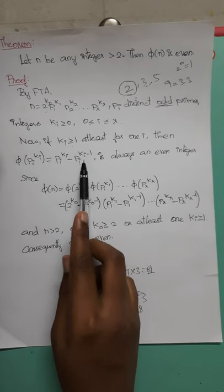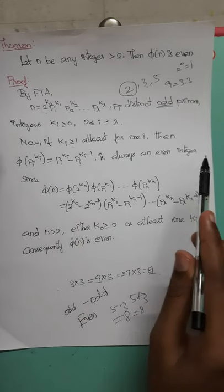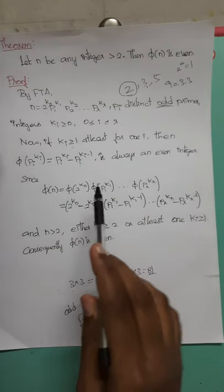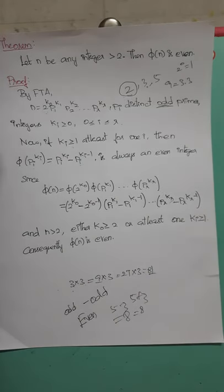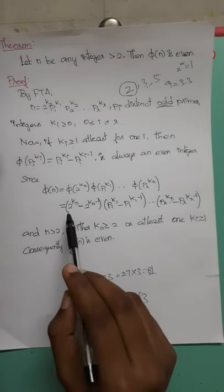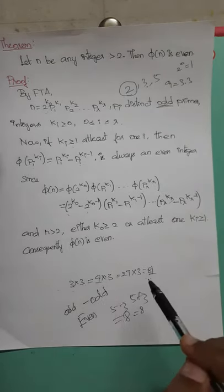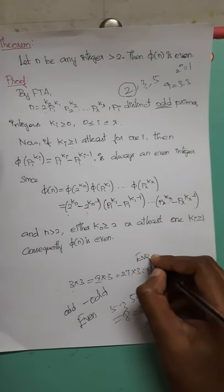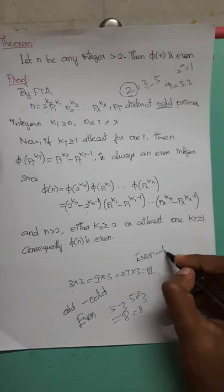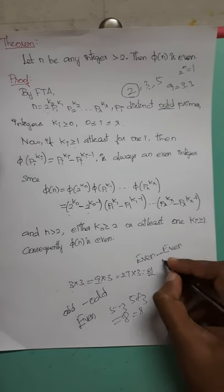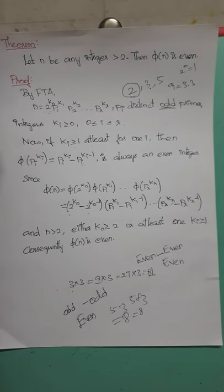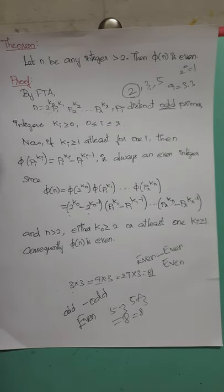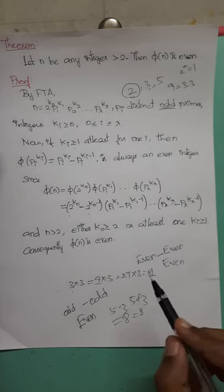If we write two odd terms, we will have an even index. If we write pi of pi, we will have even. Writing two odd terms gives an even index. With our theory, if we write two odd terms, we will have a representative even index.